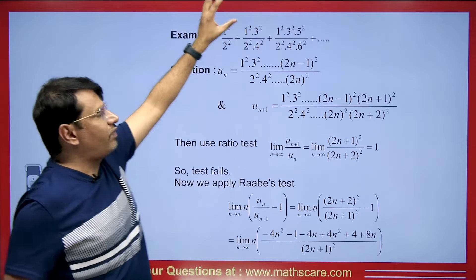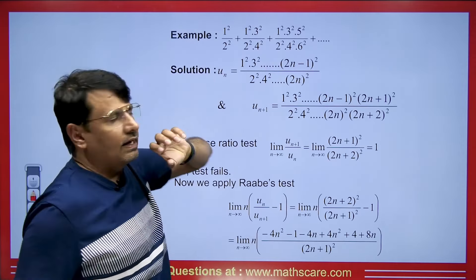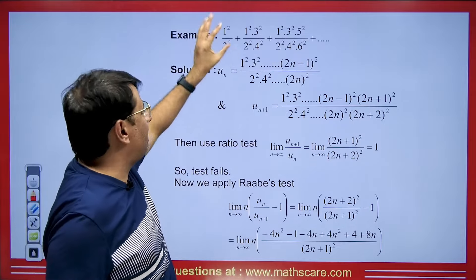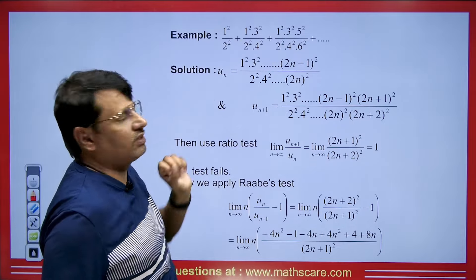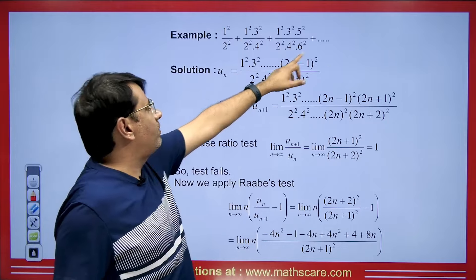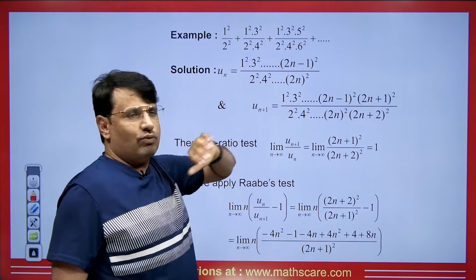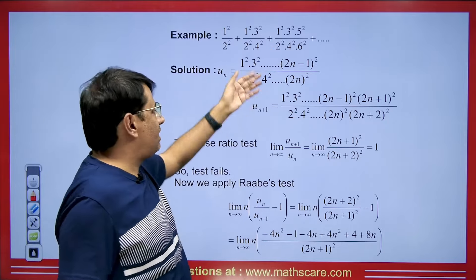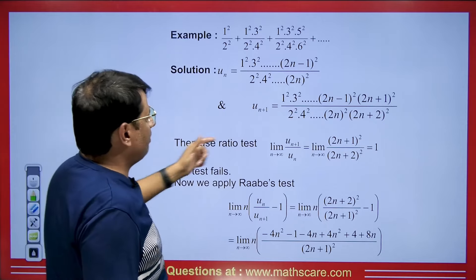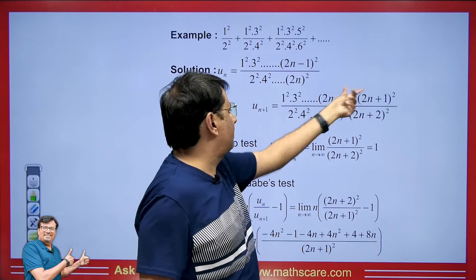Let's take an example. Suppose we have an infinite series and need to determine if it is convergent or divergent. First, we will find its Nth term: 1², 3²,... which is the whole square of (2N−1) in the numerator, and 2², 4²,..., (2N)² in the denominator. Now we will find its U_{N+1} term by writing each factor one term ahead.